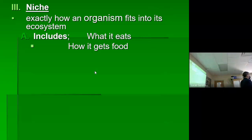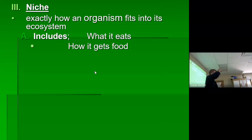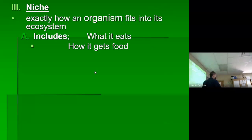Have you ever seen a cheetah actually catch its food? It's different than you'd think. Unlike a lion jumping on the back of something, a cheetah just runs until it thinks the antelope is tired enough, then takes a swipe at its back legs to tangle them up, and the antelope goes down in a heap. Then the cheetah jumps on it — it's almost like cheating, cheetah.